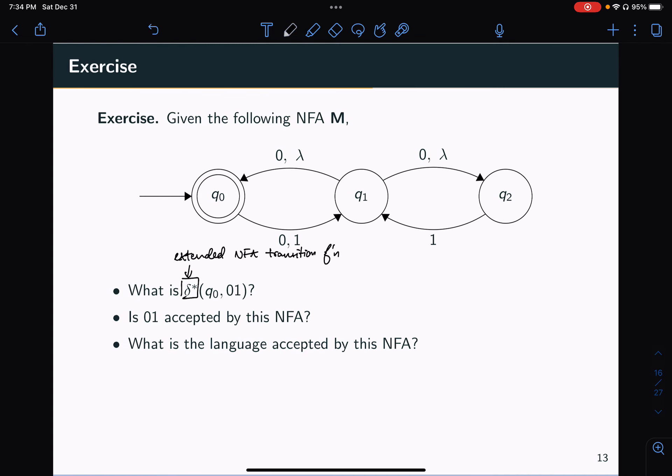So suppose we're reading the string zero one. We know that Q0 starts here. So we start at Q0. What we can do is we can start by reading this zero. So we read this zero. Then we need to read a one. So initially, it might seem that we're not actually able to do that. But what we can do is we can take this lambda transition for free, go from Q1 back to Q0.